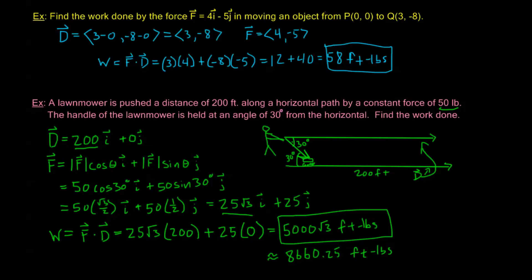And that's how we calculate work using the dot product. That's going to end all the work we're doing in this course on vectors. Our next videos are going to start dealing with conic sections — that's graphing and recognizing parabolas, ellipses, and hyperbolas. We'll see you there.